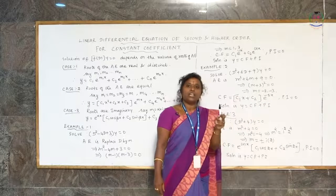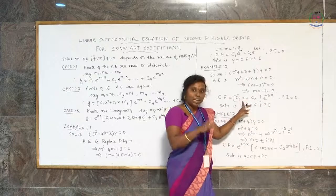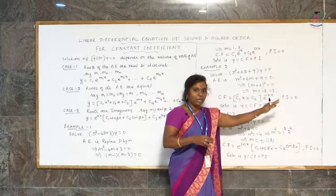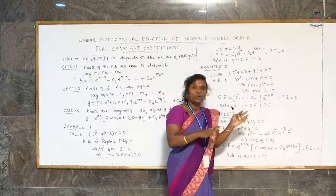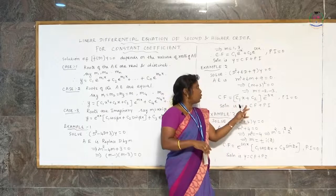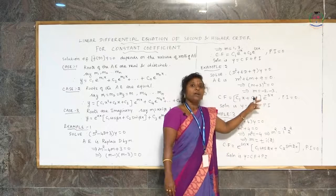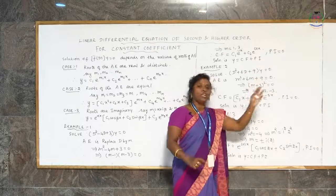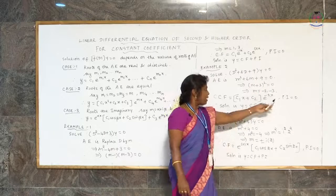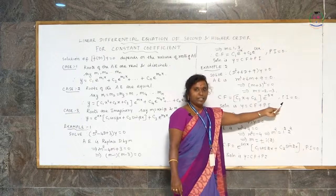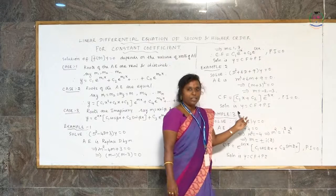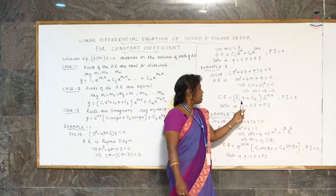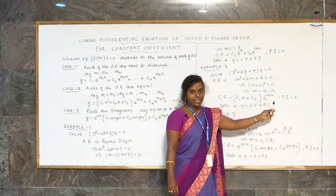If three roots are equal, the form is (c₁x² plus c₂x plus c₃)e^(root·x). If four roots are equal, it becomes (c₁x³ plus c₂x² plus c₃x plus c₄)e^(root·x). In this problem the particular integral is 0, so the general solution is y equals (c₁x plus c₂)e^(minus 3x).